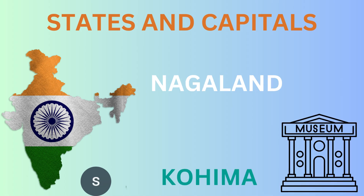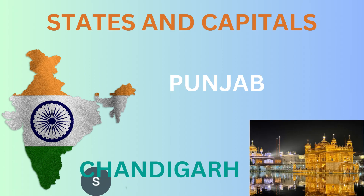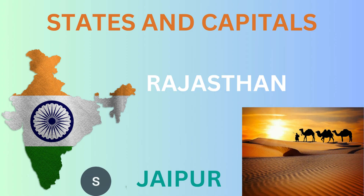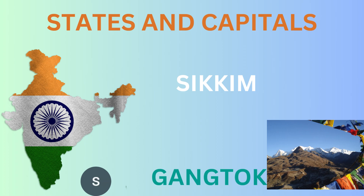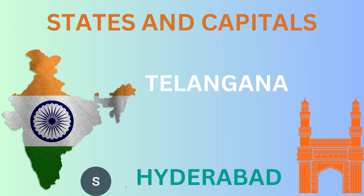Punjab, Capital Chandihar. Rajasthan, Capital Jaipur. Sikkim, Capital Gangtok. Tamaladu, Capital Chennai. Telugana, Capital Hyderabad.